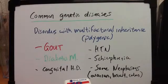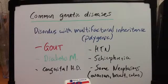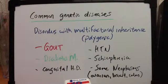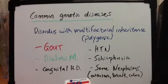In addition, we should consider common genetic diseases that are polygenic, including diabetes mellitus, certain forms of congenital heart disease, hypertension, schizophrenia, and some neoplasms — for example, ovarian, breast, and colon cancer.